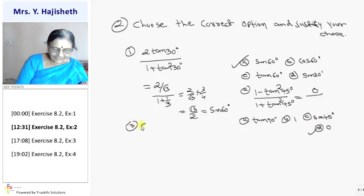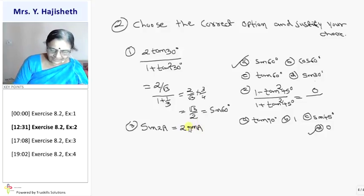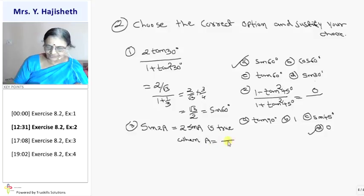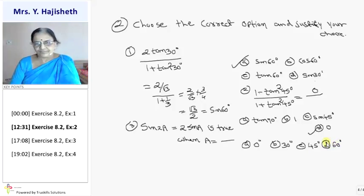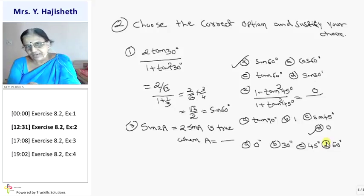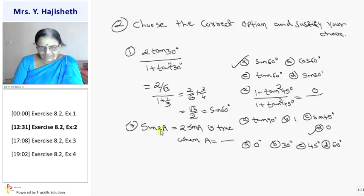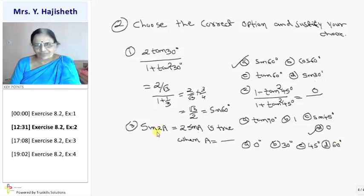Third: sin2A = 2sinA. This is a very important formula in class 11 — the actual formula is 2sinA into cosA. Here sin2A = 2sinA is true only when cosA equals 1, i.e., when A = 0°. It is not true for all values of A. If I put 30, sin60 cannot be 2sin30; if I put 45, sin90 is not 2sin45. So the answer is 0 degree.